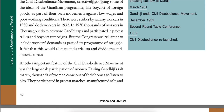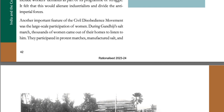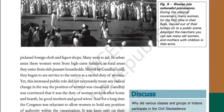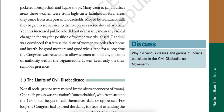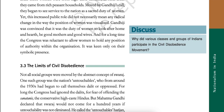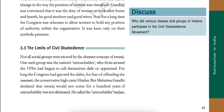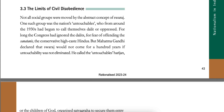Another important feature of the civil disobedience movement was the large-scale participation of women during Gandhiji's Salt March. Thousands of women came out of their homes to listen to him. They participated in protest marches, manufactured salt and picketed foreign cloth and liquor shops. Many went to jail. In urban areas, these women were from high caste families; in rural areas, they came from rich peasant households. Moved by Gandhiji's call, they began to see service to the nation as a sacred duty of women. Yet this increased public role did not necessarily mean any radical changes in the way the position of women was visualized. Gandhiji was convinced that it was the duty of women to look after home and heart, be good mothers and good wives. And for a long time, the Congress was reluctant to allow women to hold any position of authority within the organization — it was keen only on their symbolic presence.